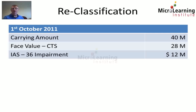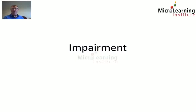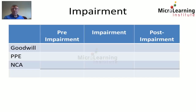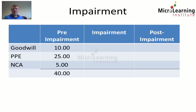The next question is: how do we allocate that impairment? Prior to impairment, the cash generating unit was held with net current assets at a value of 5 million, property plant and equipment at 25 million, and goodwill at 10 million dollars, giving a total carrying amount of 40 million dollars.